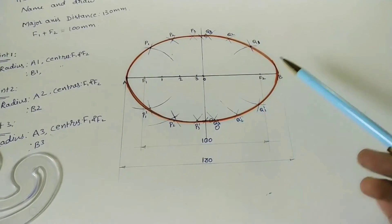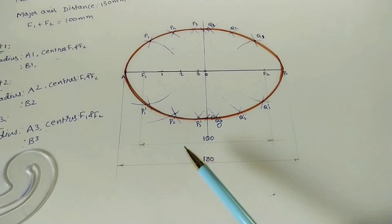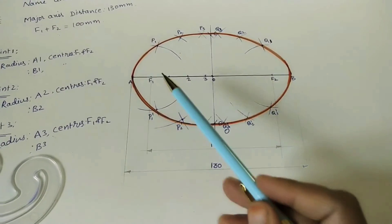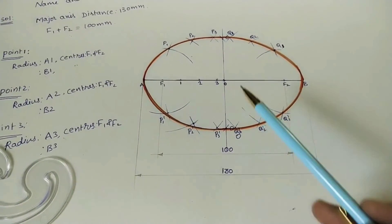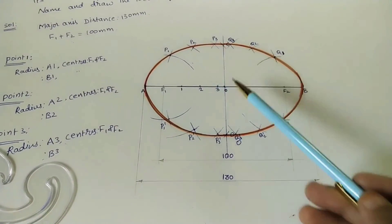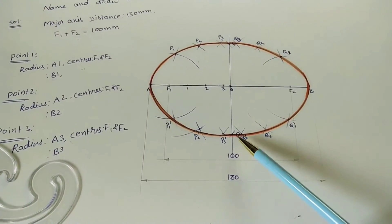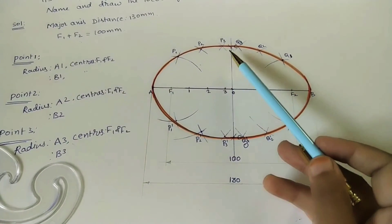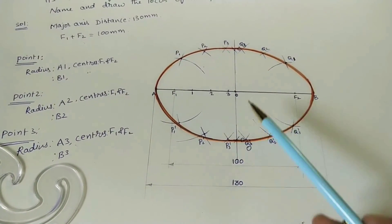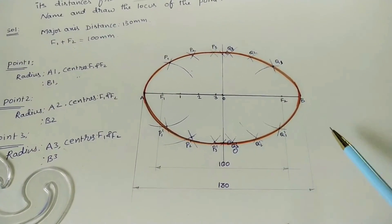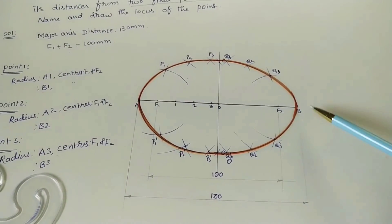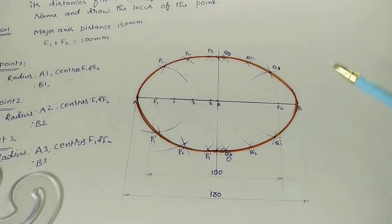Finally, mark the given dimensions — that is, the major axis length and the fixed point distance of 100 mm. If the question asks for the minor axis length, measure CD with a scale and mark it on the vertical dimensional line.